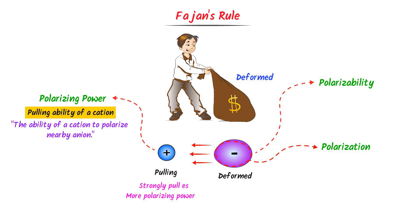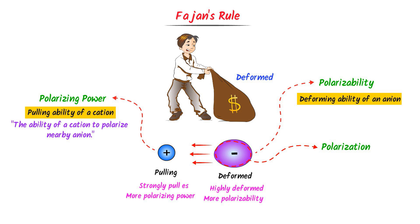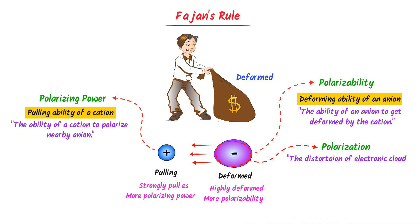Polarizability is the deforming ability of an anion. When the anion experiences a strong pull from the cation, it will be highly deformed and its polarizability will be high — defined as the ability of an anion to get deformed by the cation. Thirdly, we define polarization as the distortion of the electronic cloud of an anion towards the cation.